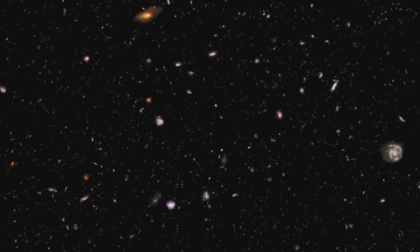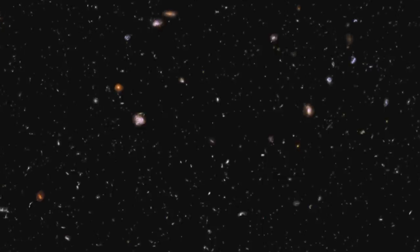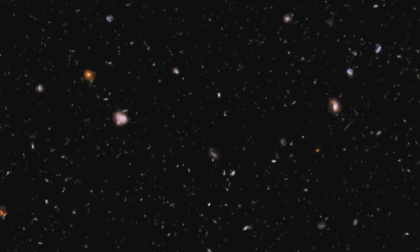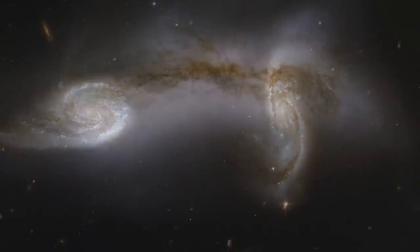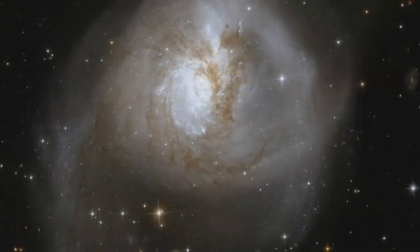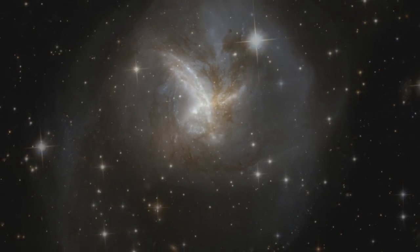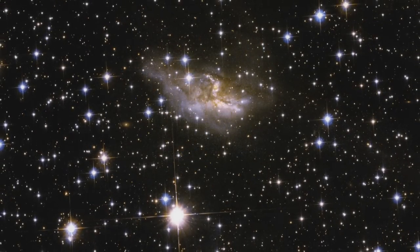The Universe is a pretty empty place, dotted with galaxies at immense distances from one another. But occasionally, two or more galaxies will come close to each other. This can lead to them coalescing into one larger body, an event known as a galactic merger.